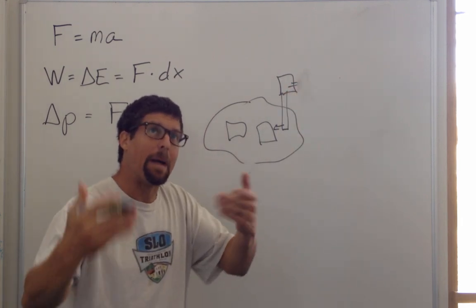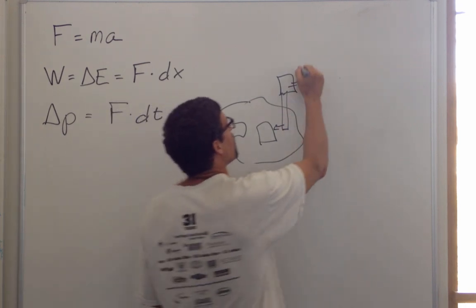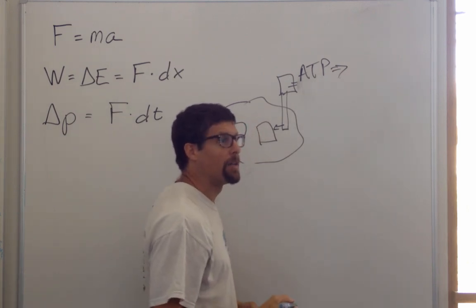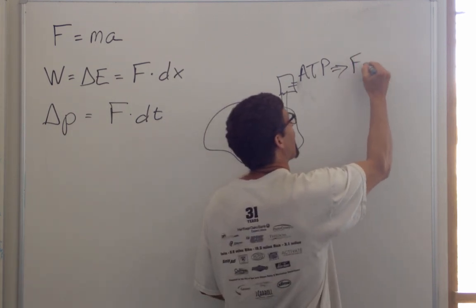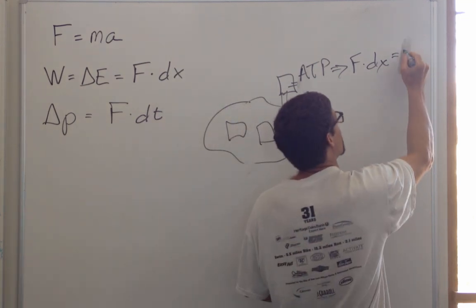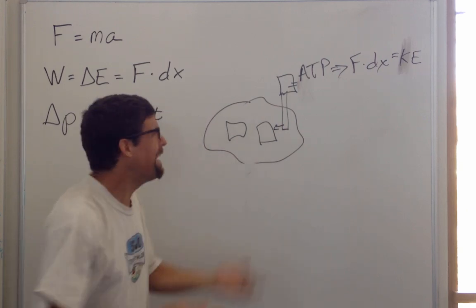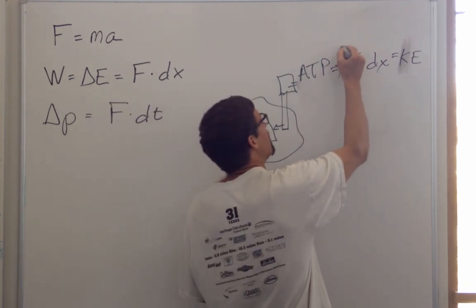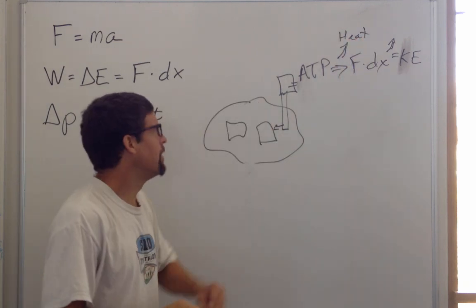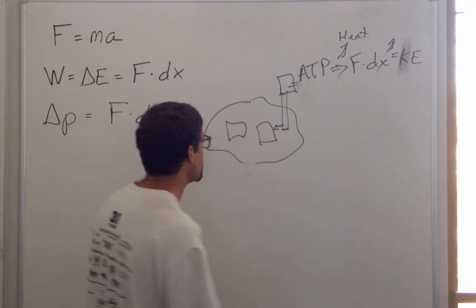And in this case, what we talked about is it comes from my muscles, right? My muscles transformed the chemical potential energy in my body, that was ATP, turned into force times the distance that my hand had to move, turned to kinetic energy. And, of course, along the way, there's some energy lost to heat. And none of these processes are perfectly efficient.